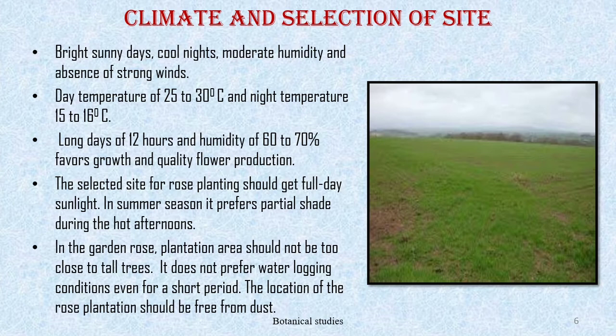Selection of site is very important for the successful growing of roses. The selected site for rose planting should get full day sunlight; in summer season it prefers partial shade during the hot afternoons. In the garden, the rose plantation area should not be too close to tall trees. It does not prefer waterlogging conditions even for a short period, and the location of the rose plantation should be free from dust.